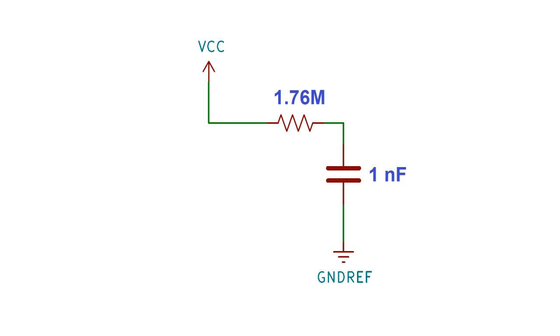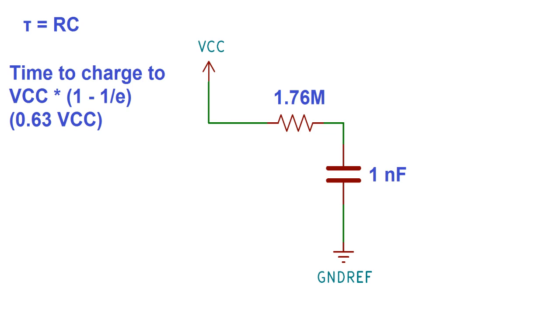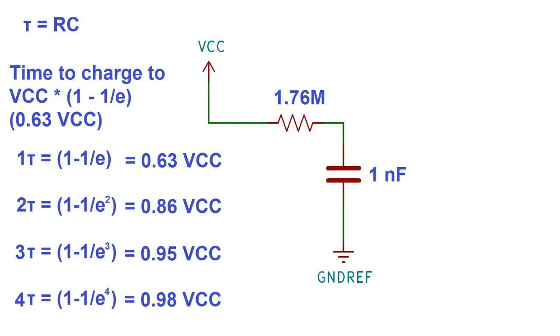Now there's this thing called an RC time constant, which is the time it takes to charge a capacitor to 1 minus 1 over E times the input voltage, or about 63%. Each time constant adds a power to the exponent of E, meaning the capacitor initially charges really fast, but very quickly levels off. Here you can see that to charge from 86% to 98% takes 3 times as long as charging from 0 to 63%. So in the case of my circuit, the RC time constant of the first RC pair is just under 2 milliseconds.